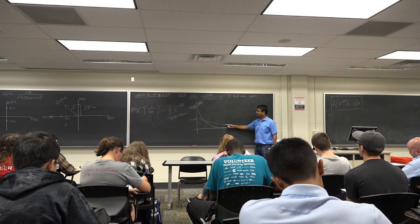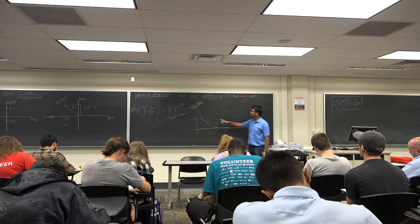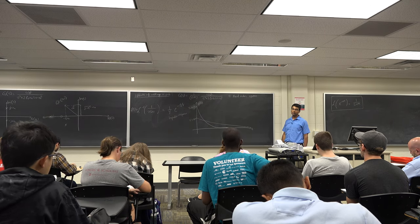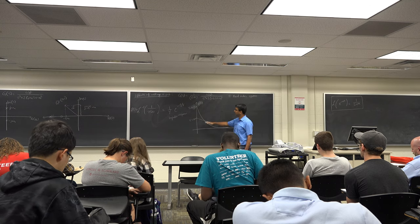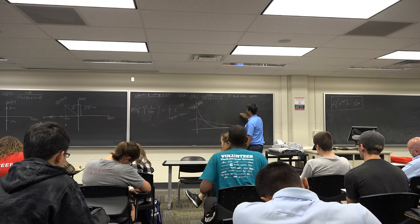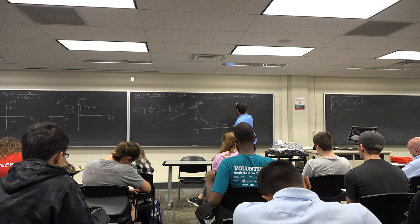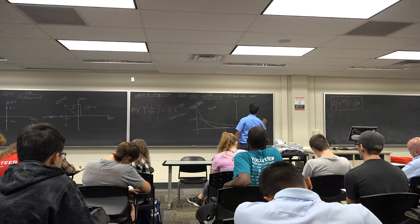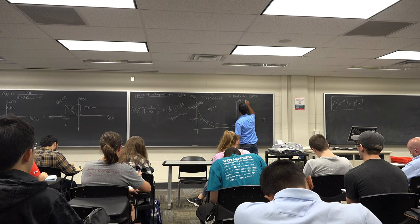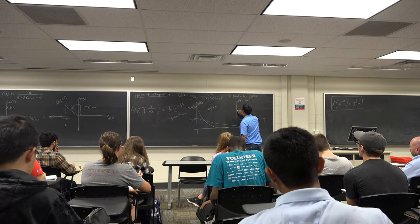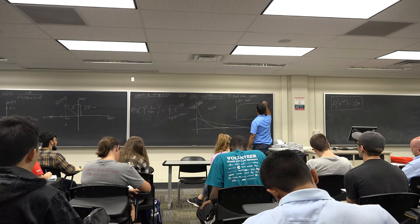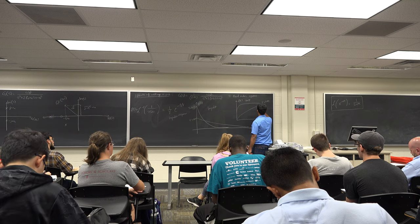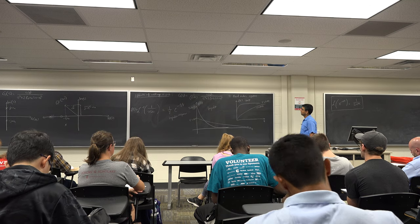For large gamma the signal doesn't decay rapidly; for small gamma the signal decays extremely rapidly and goes to zero very quickly. The same behavior is exhibited in the step response: gamma = 0.01 reaches steady state fast, gamma = 100 is very gradual. Both will have a steady-state limit equal to 1. For the impulse response, the steady state is 0.